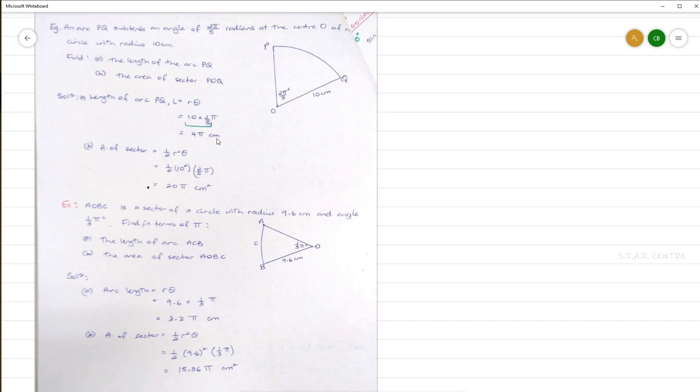Part b, area of sector OPQ. Area of the sector is found by using our formula, 1/2 r² θ. Substituting our radius r is 10 and θ is 2/5 π. Simplifying all of it except the π will give us 20π cm squared. So in this case, both length of the arc and area of a sector, the final answer is given in terms of π. Ensure that the appropriate units is also used. Length of an arc units would be centimeters, area units would be cm squared.